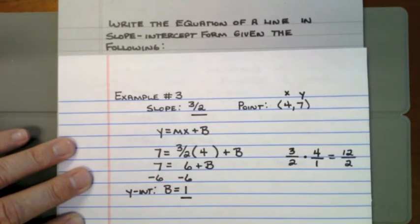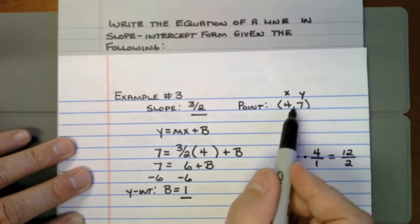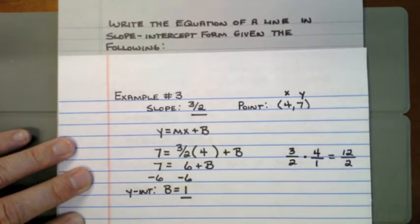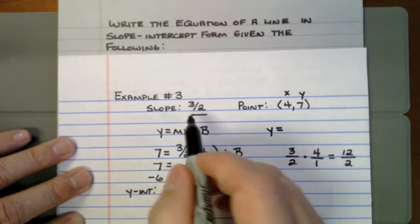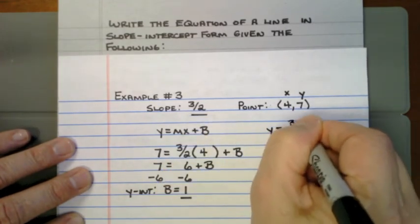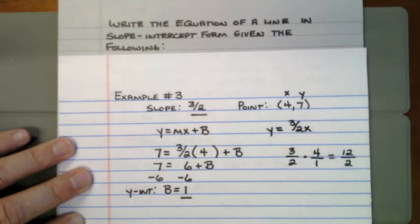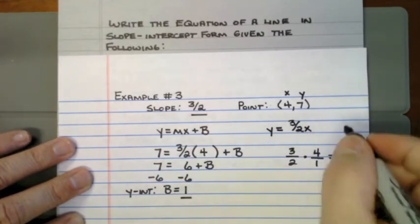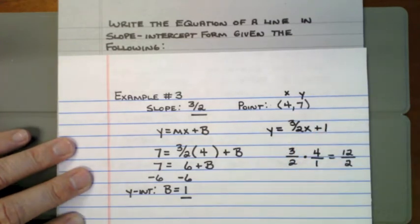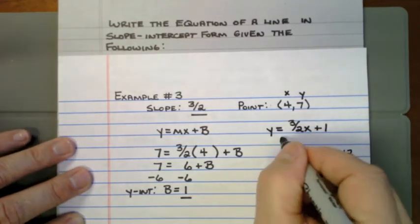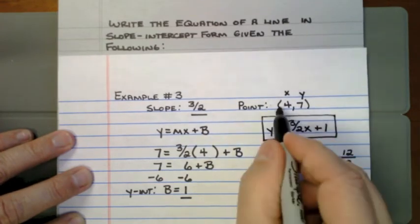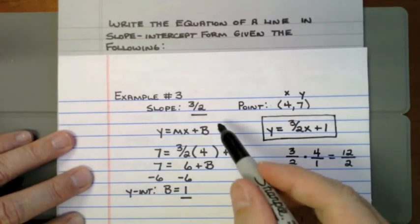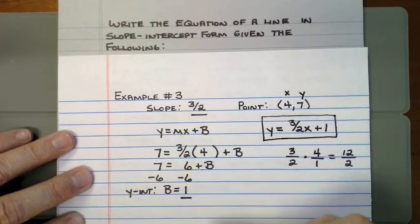I've got the slope and the y-intercept to plug into the formula. The equation of a line starts with y is equal to, then write the slope — 3 halves — with an x beside it. On the end is the y-intercept: positive 1. This is the equation of the line that passes through that point and has that slope. I simply had to figure out what the y-intercept was.